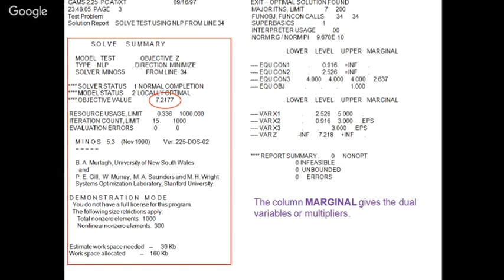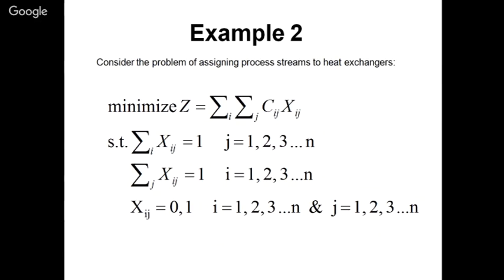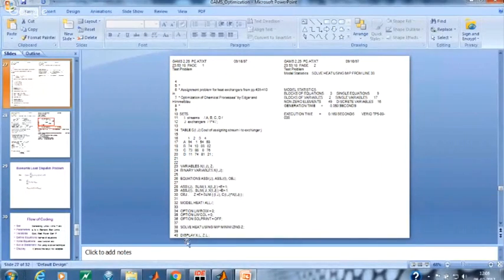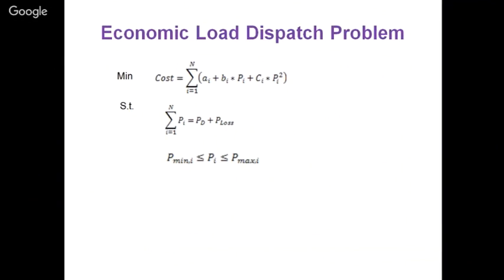For bidding strategies in electricity markets, the marginal value is critical. Generators decide their bid price based on how much it costs to generate the next unit of power. If the marginal cost is 10 rupees, a generator might bid 12 or 15 rupees — they cannot bid below cost. The .m suffix in GAMS gives this marginal value directly, without needing to write a separate equation. Now let's go directly to the GAMS environment for a demonstration.